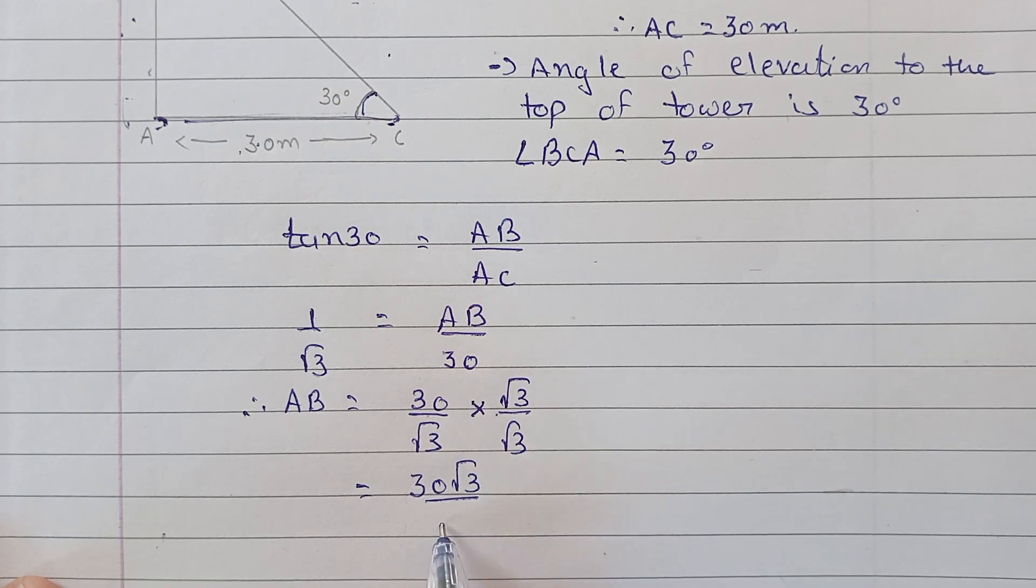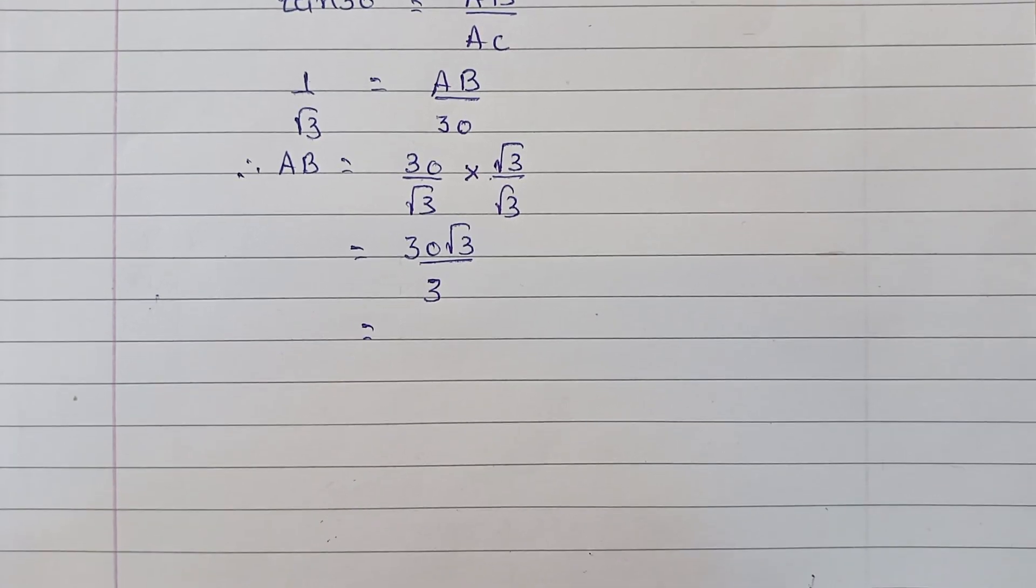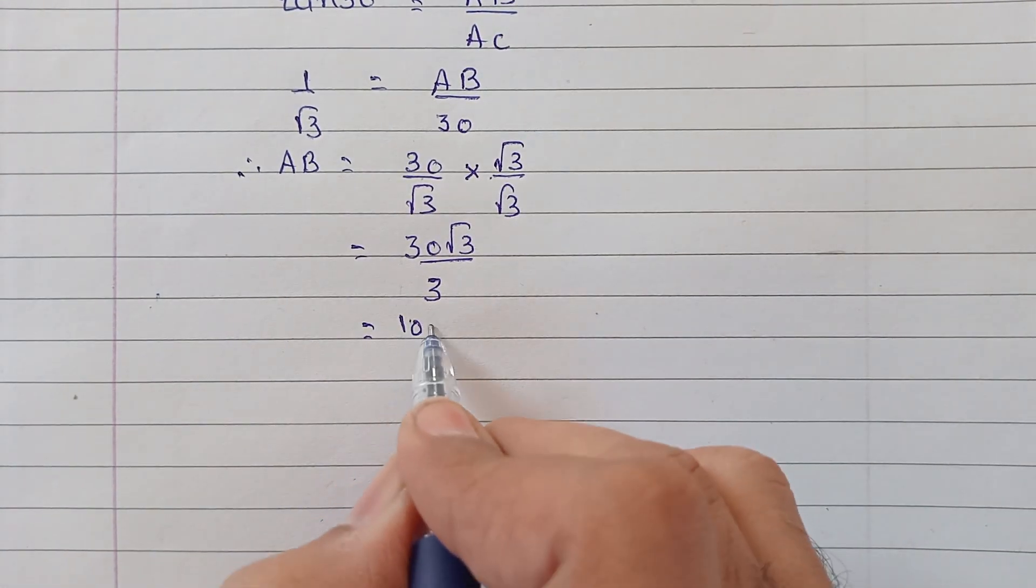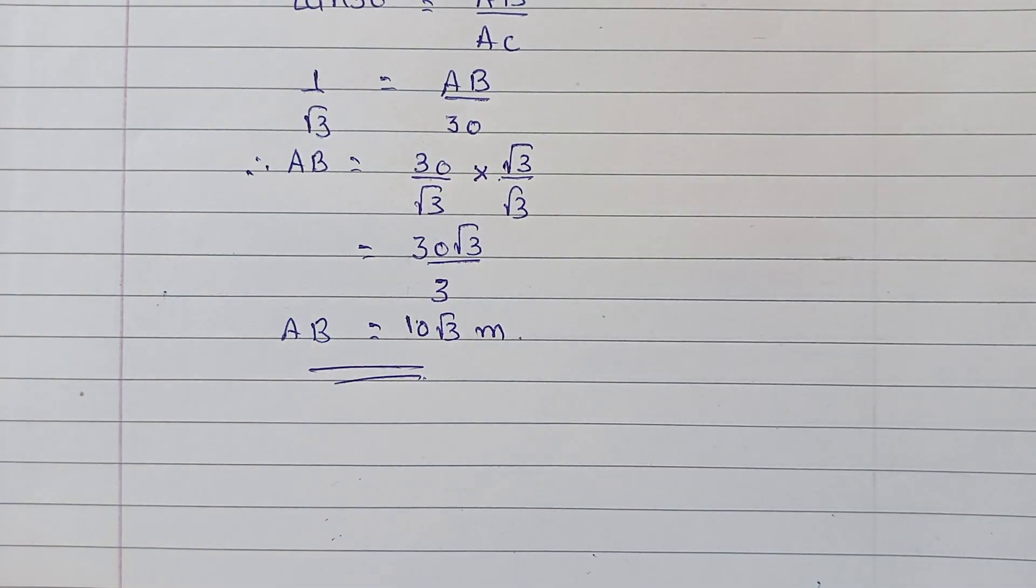divided by root 3 into root 3, which is 3. Now further solving it, 30 by 3 will be 10 root 3. So we now have the height of the tower, that is 10√3 meters. Clear? Next is question 5.